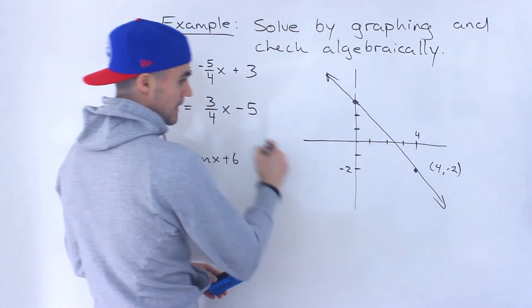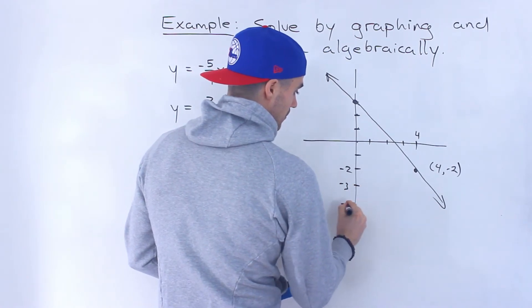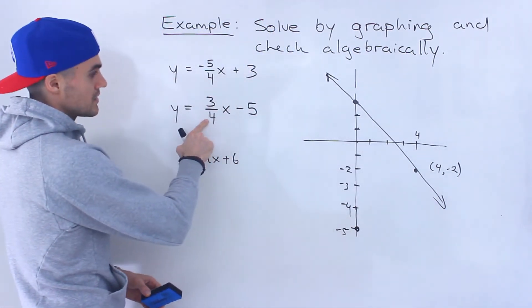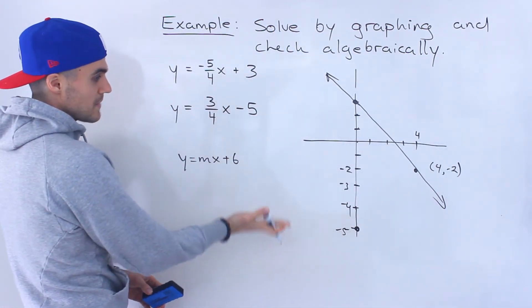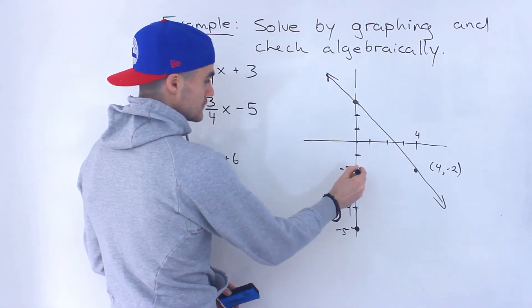So notice that the b value is minus 5. So minus 5, we're starting here. And notice that this is a positive slope. So we're going to rise by 3. So from negative 5, if we rise 3, we get to negative 2.